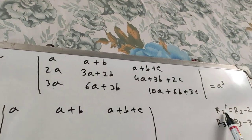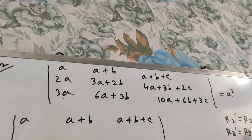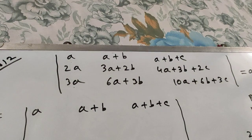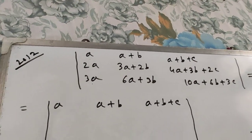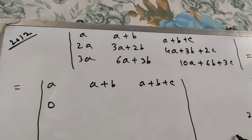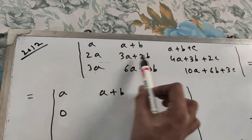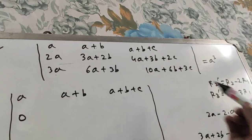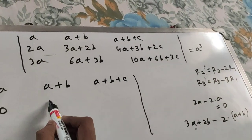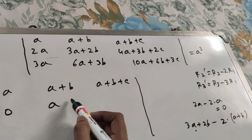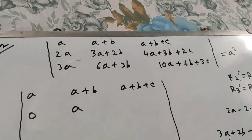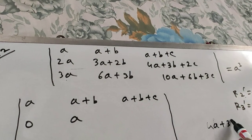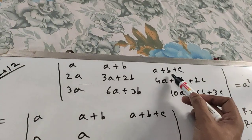Write R1 as it was: a, a+b, a+b+c. Now R2 dash = R2 minus 2R1. For the first element: 2a minus 2 times a equals 0. For the second element: 3a+2b minus 2(a+b) gives 3a minus 2a = a, and 2b minus 2b cancels, so you get a. For the third element: R2 minus 2R1 gives 4a+3b+2c minus 2(a+b+c), which gives 2a+b.